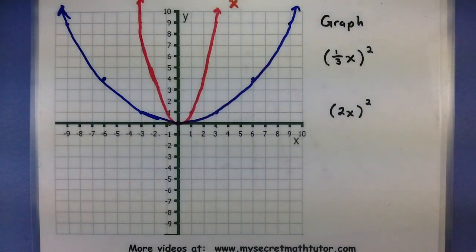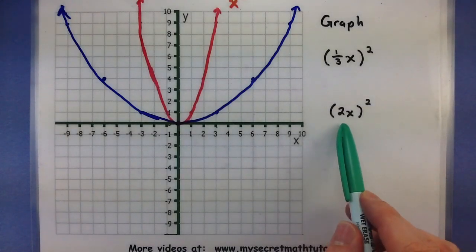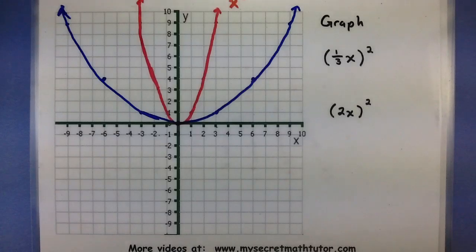All right, so let's do the other one. This one is 2x quantity squared, so I'm multiplying on the inside by 2, and that's a number larger than 1. So this will shrink it by a factor of 2. That means we'll take every single x value and we'll actually divide it by 2.